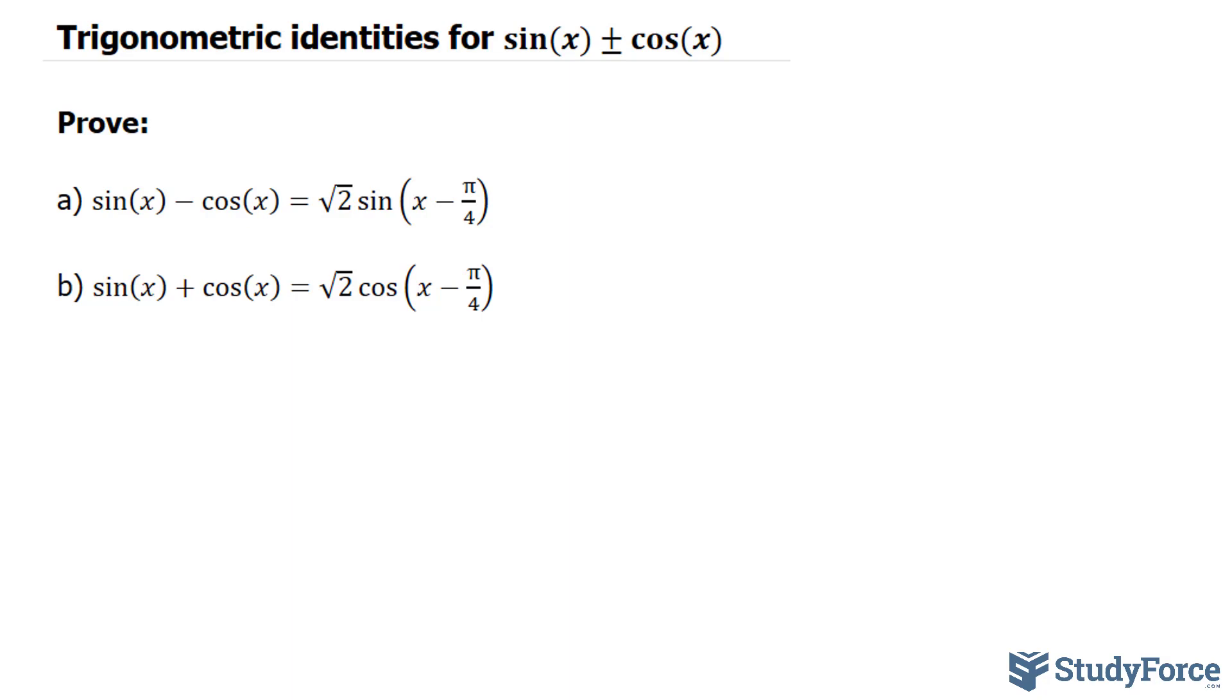Now, you might find this helpful whenever you have sin(x) minus cos(x), and you want to reduce two terms into a single term. Notice that the equivalent expression is a single term with sine, and that's when the two are being subtracted.